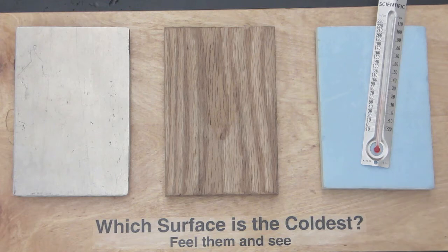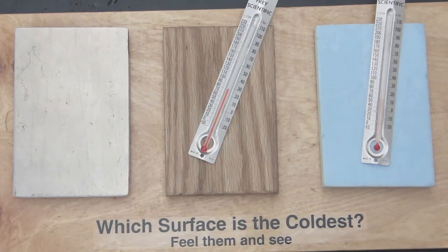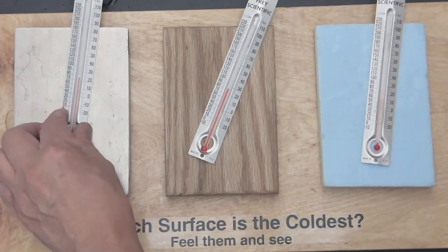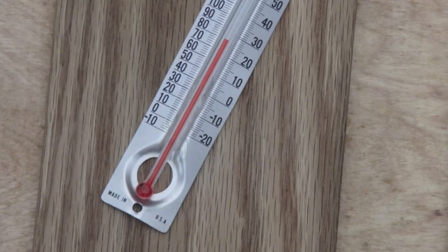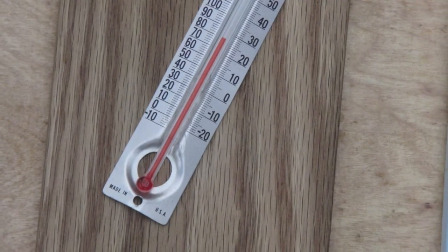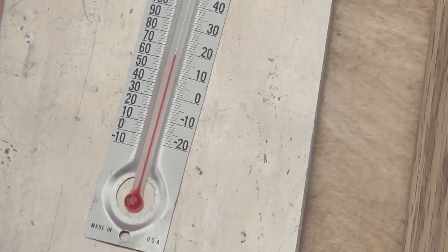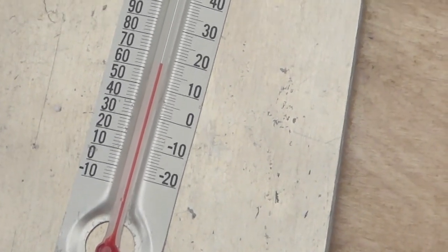Now the next step is I'll put a thermometer on each block and see if we get any change. After a minute, the foam temperature has not changed. The wood temperature hasn't changed, but when we check the metal, it has actually dropped about 20 degrees from where it was previously.